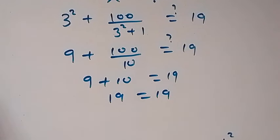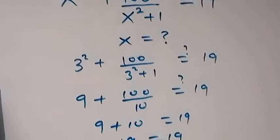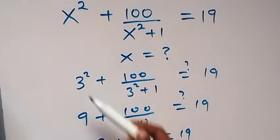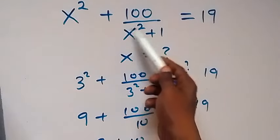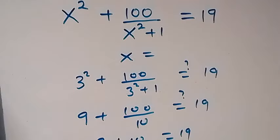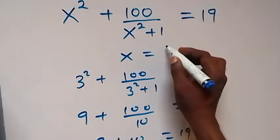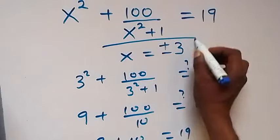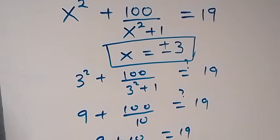We can see that x equals 3 satisfies the equation. Equally, x equals minus 3: when we square minus 3 it is positive, so we get 9. Then 9 plus 1 is 10, so x equals minus 3 also satisfies the equation. Therefore x equals plus or minus 3, and we have come to the end of this class.